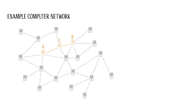Thus, computers do not need to be directly connected to exchange data. In our model, two computers A and B can send messages to each other if there is a path between their corresponding vertices. Through our model network, phone calls between the computers of two people can take place. Suppose Antje and Bob want to have a phone call. For them to be able to talk to each other, their computers must be connected by a path.